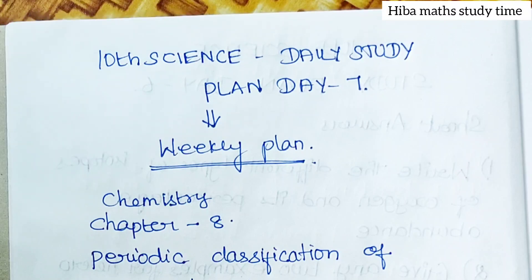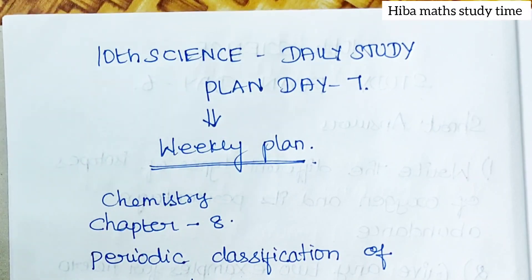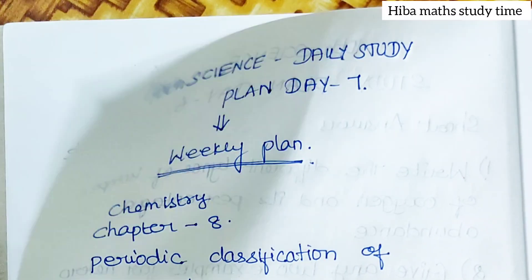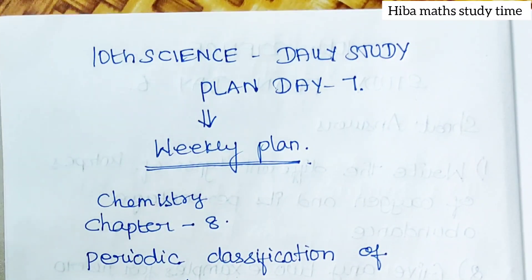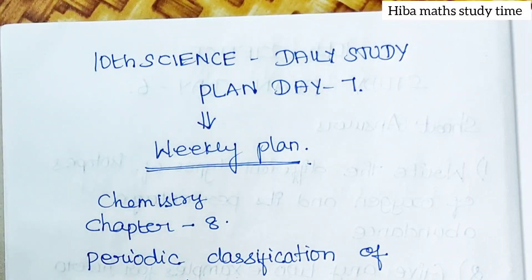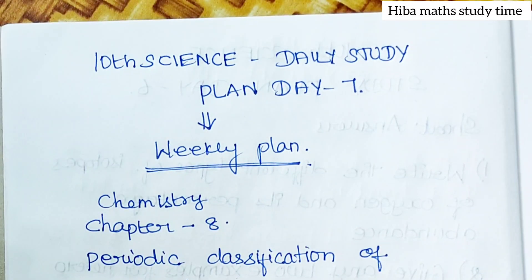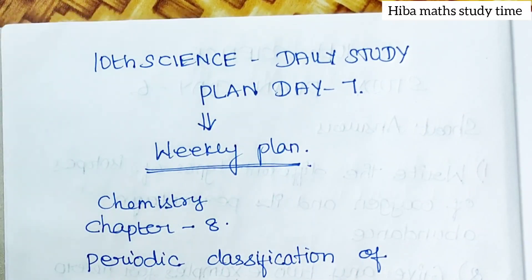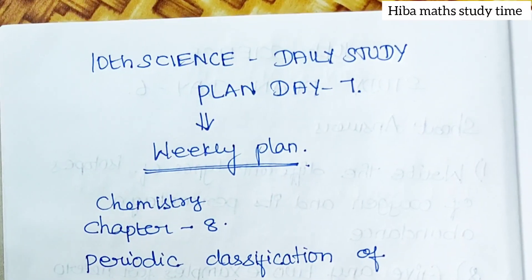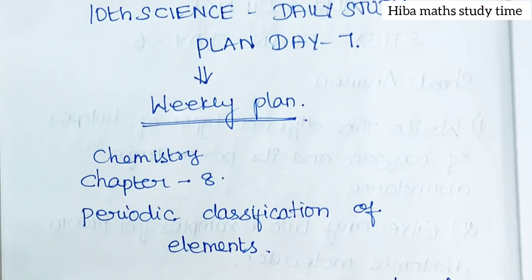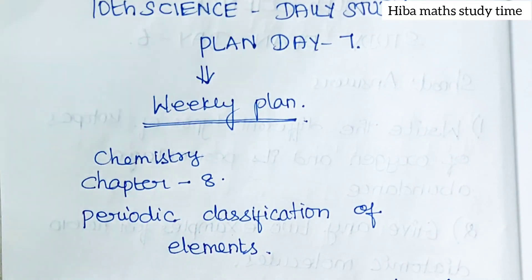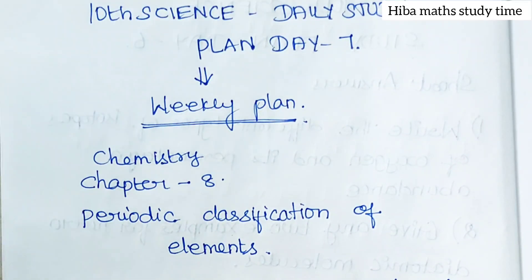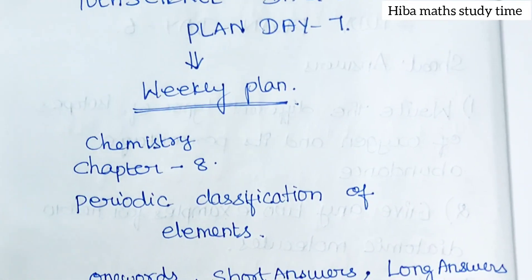On Saturday, science question paper. Day 7: what is the work of chemistry, Chapter 8 — Periodic Classification of Elements.